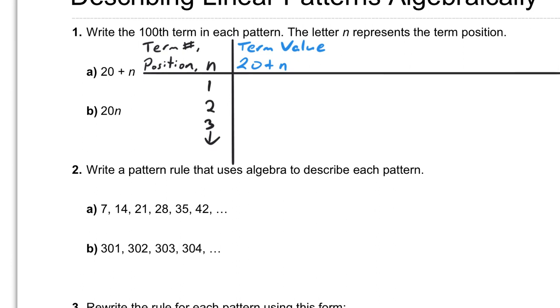So in the first term, you can say instead of 20 plus n, you would just substitute the 1 for it, which is 21. So the value in the first term is 21.